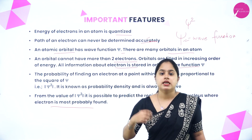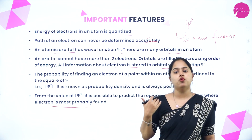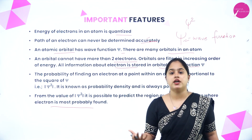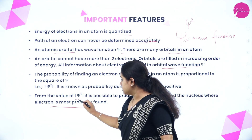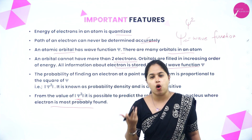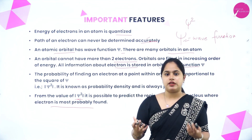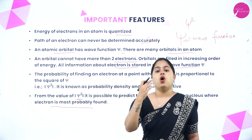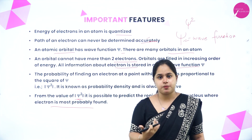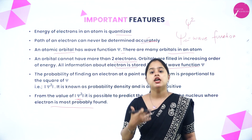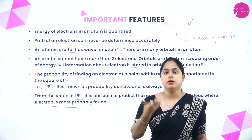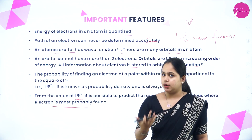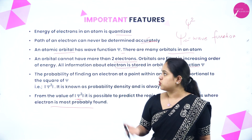Electrons are not moving in exact circular paths. There are certain regions where the probability of finding an electron is high, given by psi square. An atomic orbital is basically the region in which the probability of finding an electron is high. To understand the shape, size, and orientation of orbitals, we study quantum numbers.